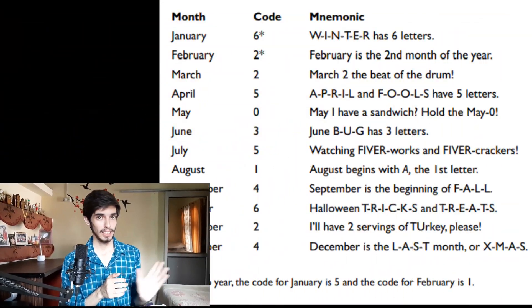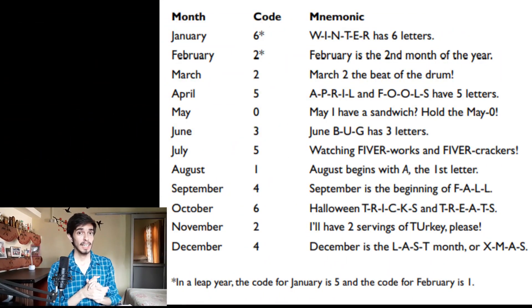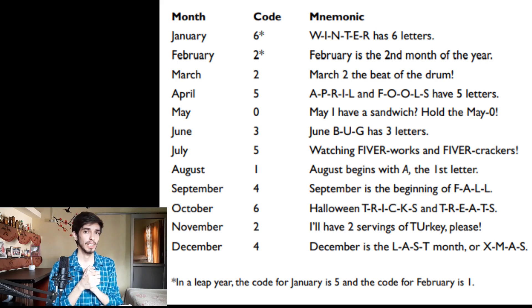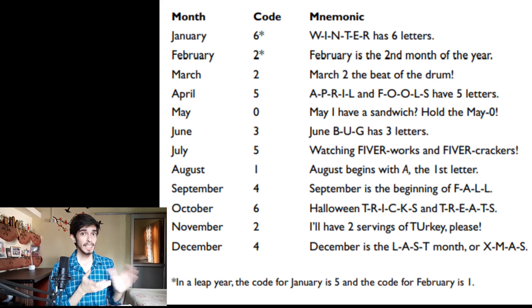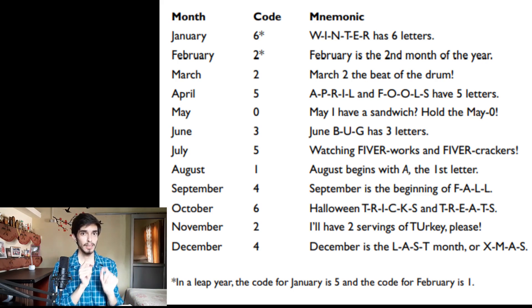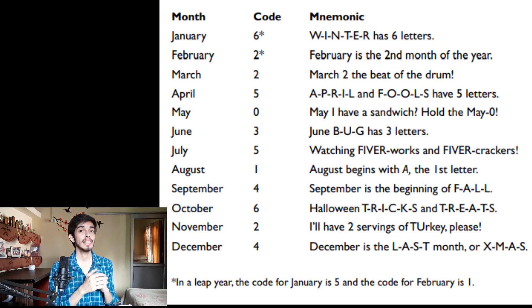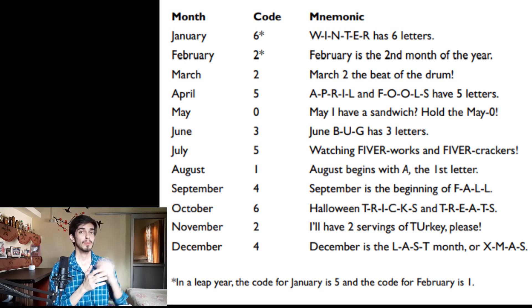There are some mnemonics for the month codes given by Sir Arthur Benjamin. Look at the table: each month has a code number and a mnemonic associated with it. Read it and try to associate these numbers with the months. Remember that for leap years, the code of January is 5 and the code of February is 1. Pause this video and try to memorize this.